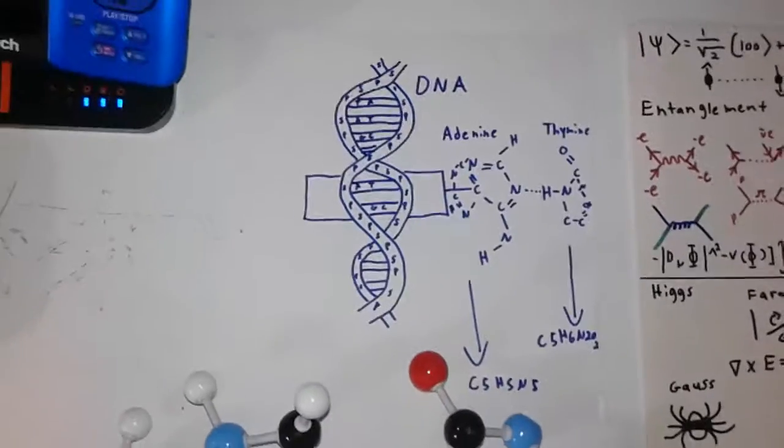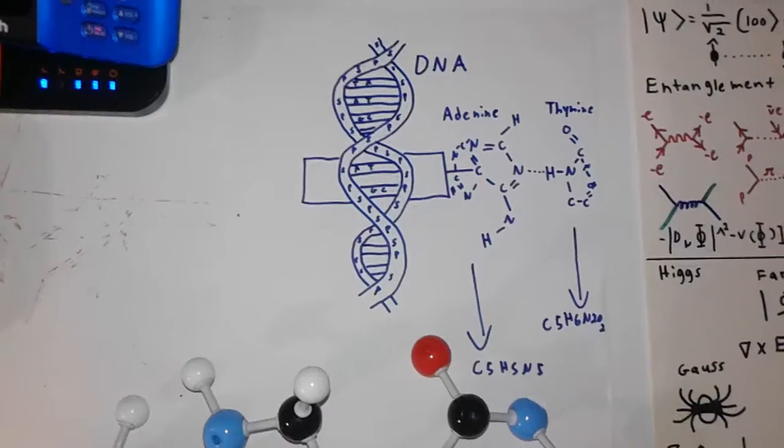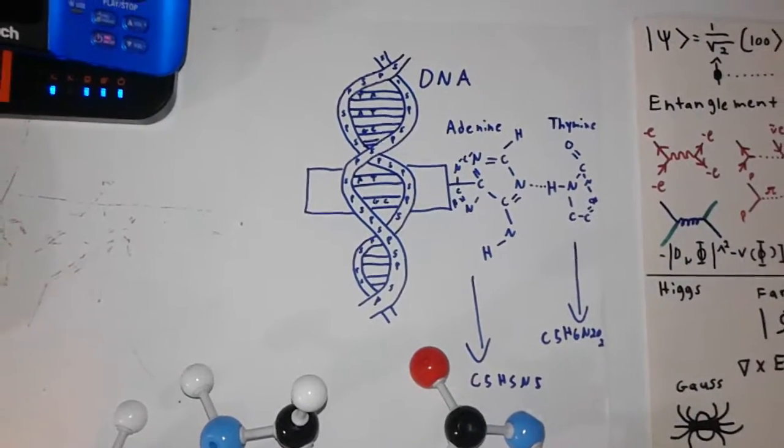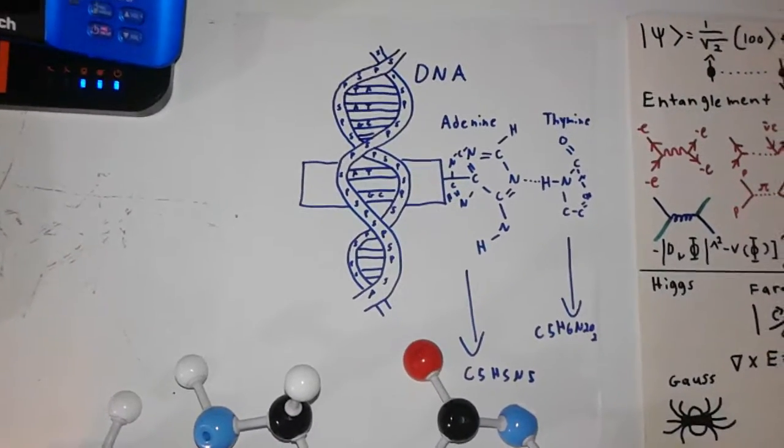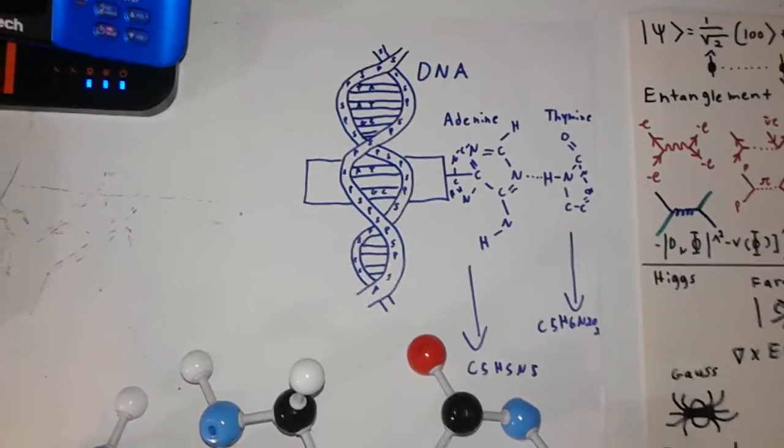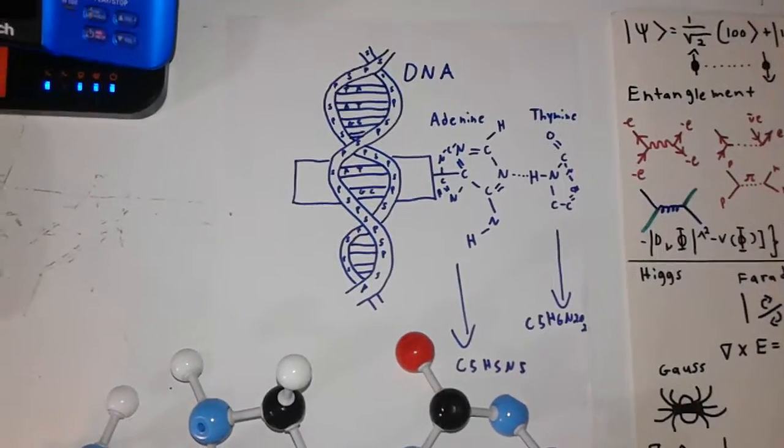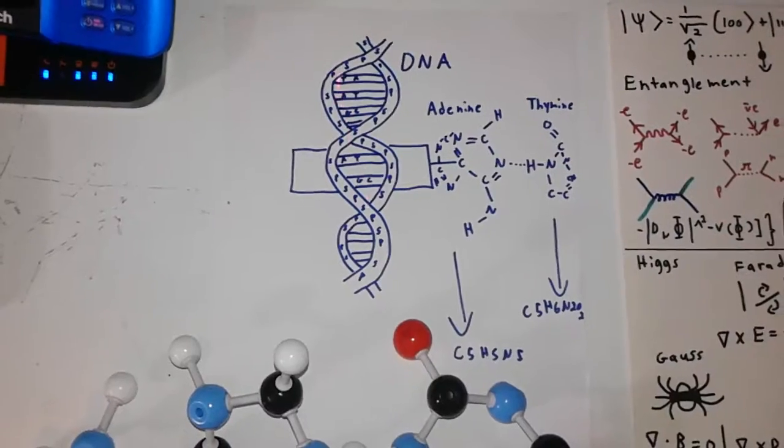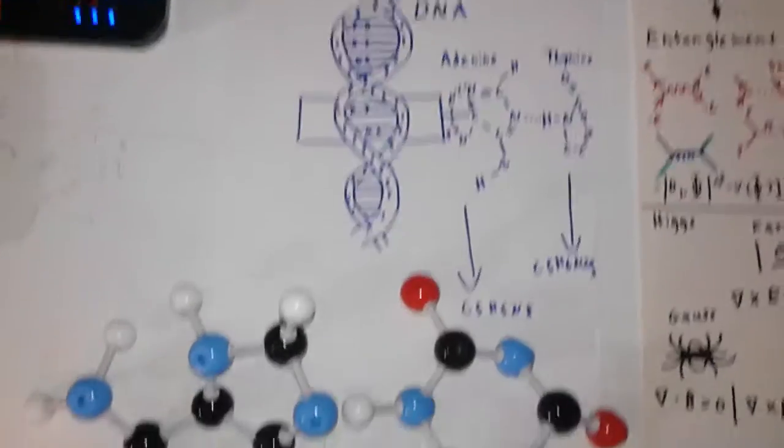How does this work in deoxyribonucleic acid? Well, over many generations of selection, termination, recombination, reproduction and mutation, it can alter certain things in the ATCG sequence.